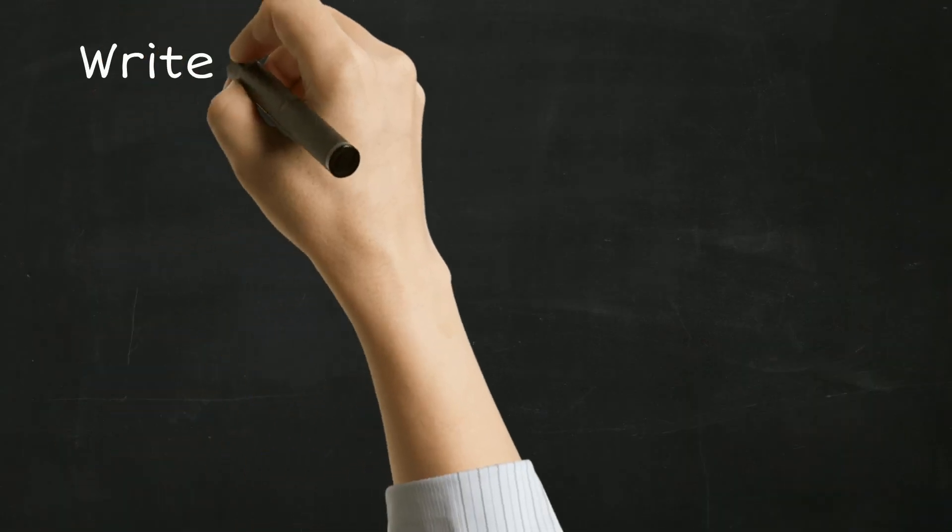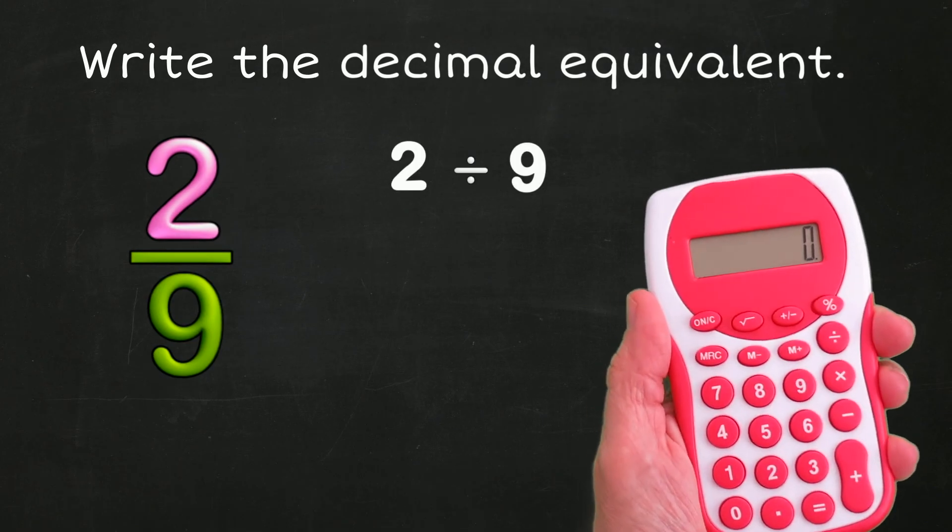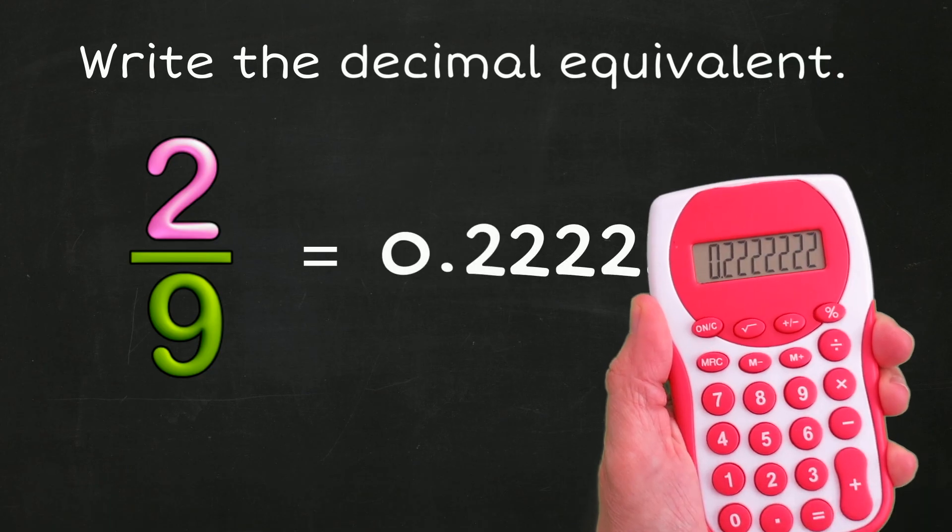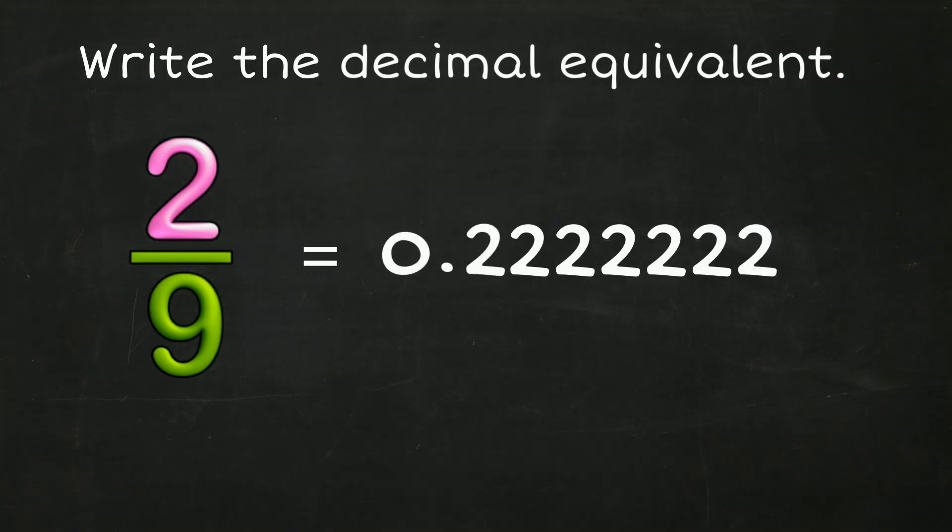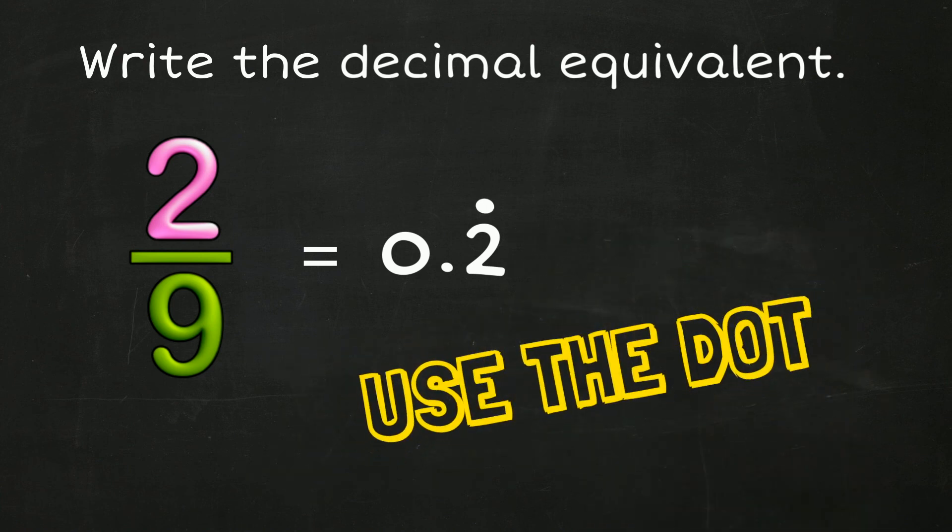So when this crops up for you in a math problem - and it will - don't just write a string of recurring digits like the calculator shows you. As soon as you find a recurring digit, just put one of those digits and use the dot!